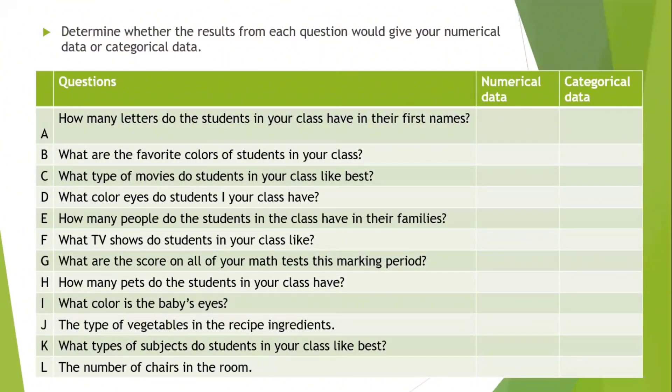Determine whether the result from each question would give you numerical data or categorical data. All of these are statistical questions that need me to make a survey and collect the data. A, how many letters do the students in your class have in their first name? Like my name is Amira, it's five letters. I'm asking each one about how many letters in his name. So this is numerical data.